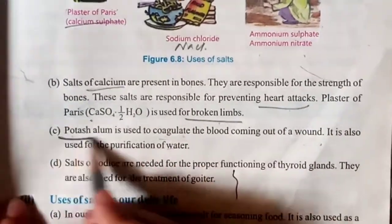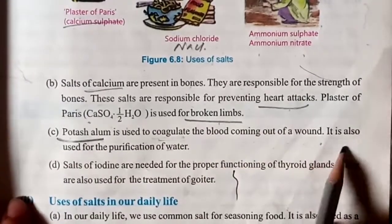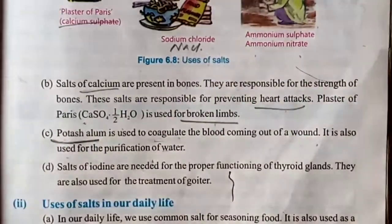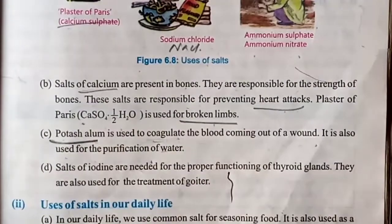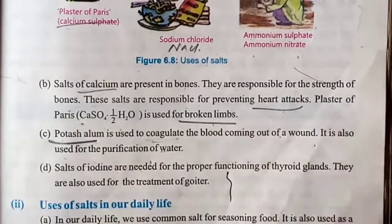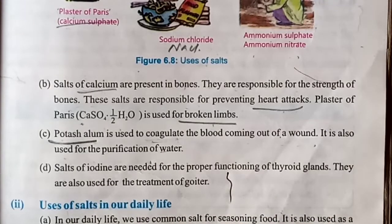Potash alum is used to coagulate blood coming out of a wound. If you have any pain and bleeding, to stop the blood, we use potash alum. It is also used for purification of water — we can use potash alum to purify water.